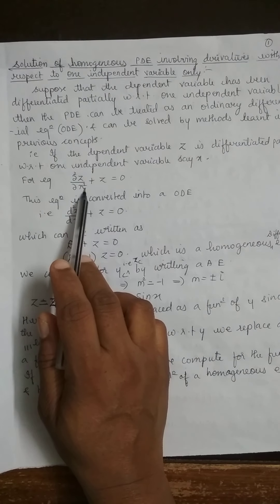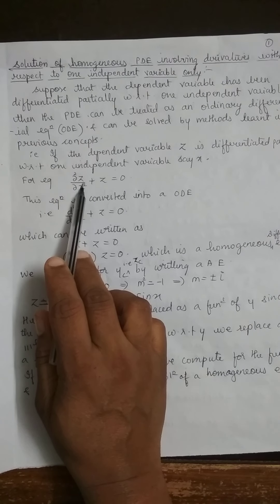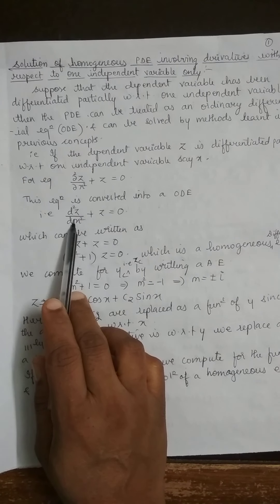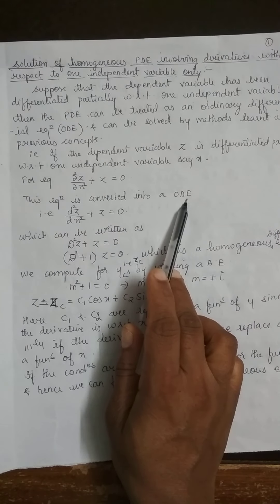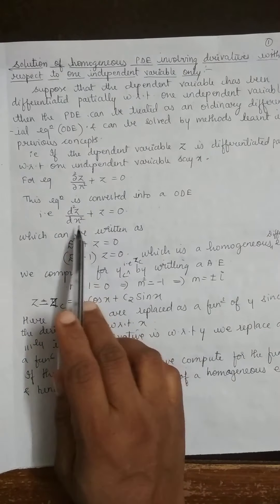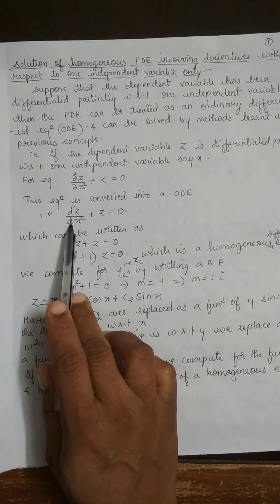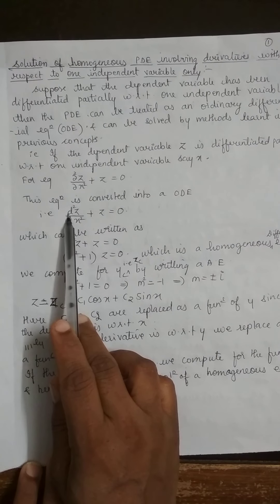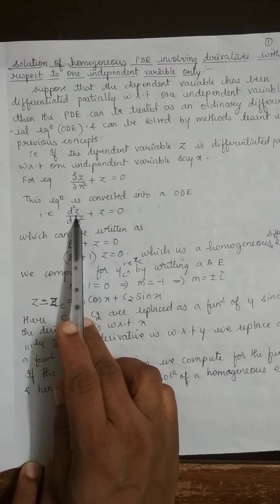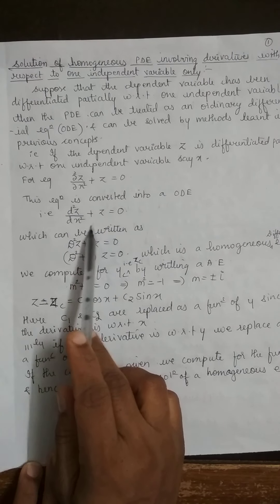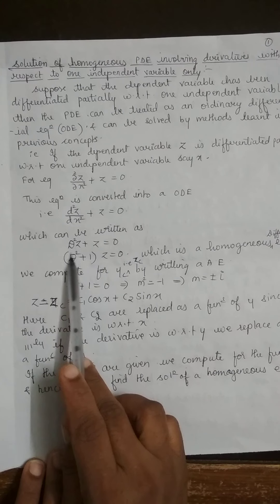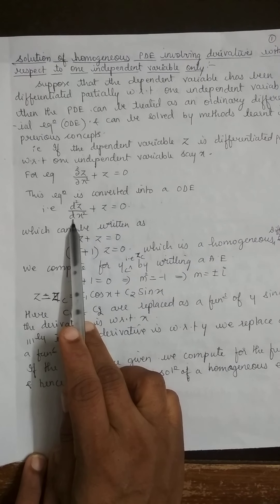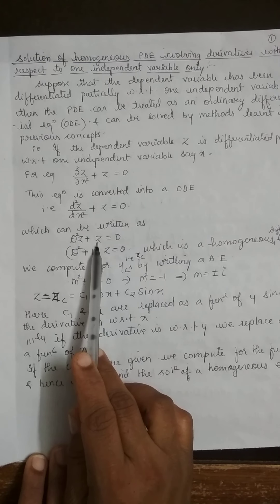When the function is differentiated with only one independent variable, we try to convert it into an ordinary differential equation. As you already know, ODE uses d instead of ∂. So ∂²z/∂x² turns out to d²z/dx², giving us d²z/dx² + z = 0. Once we convert into terms of d, we take d² of z, written as D²z, plus z equals zero.